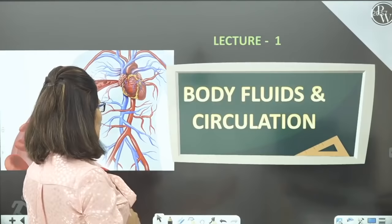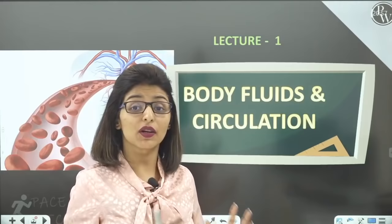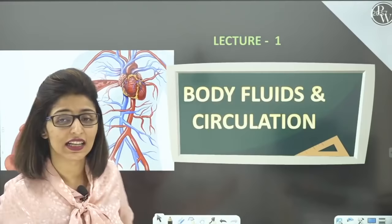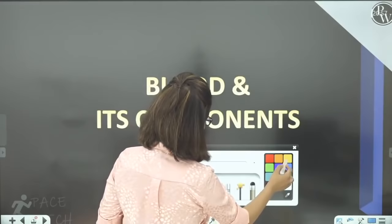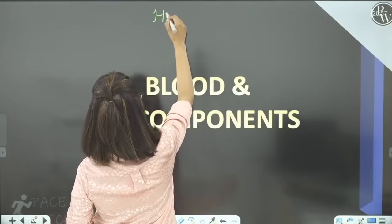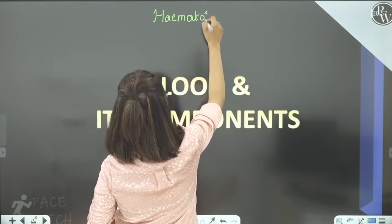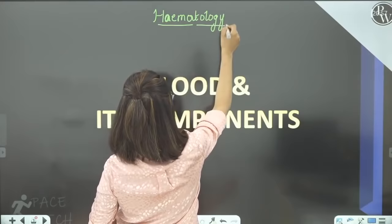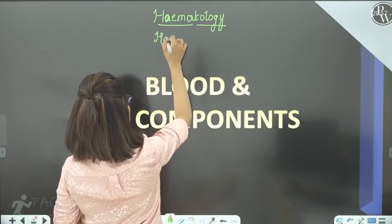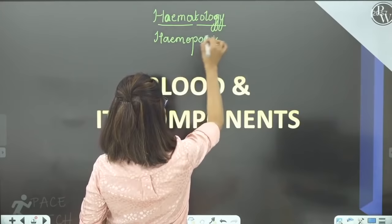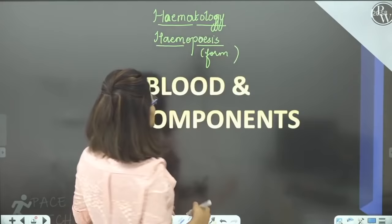In this chapter, we will learn about blood, heart, blood vessels, disorders, heart attack — all in detail. Let's start with the first component: blood and its components. Blood ki study ko bola jata hai Hematology. Blood se related jo term hoti hai — Heme — so Hematology. Blood ki formation ko kya kaha jata hai? Hemopoiesis. Poiesis word ka matlab rahega formation — erythropoiesis, leukopoiesis, hemopoiesis.